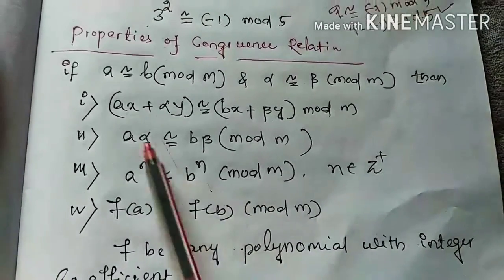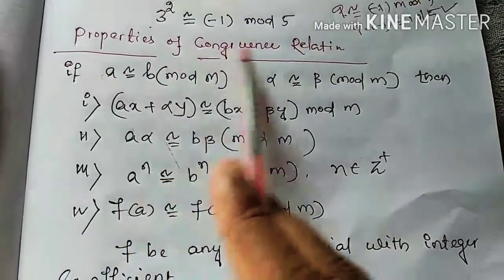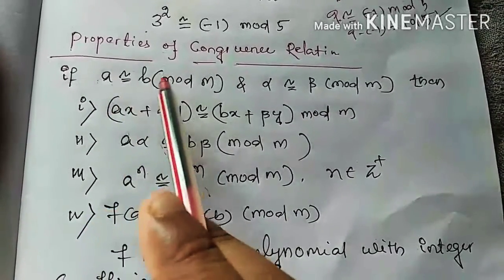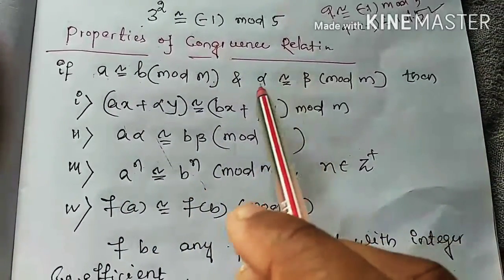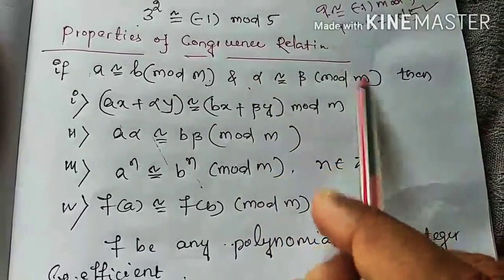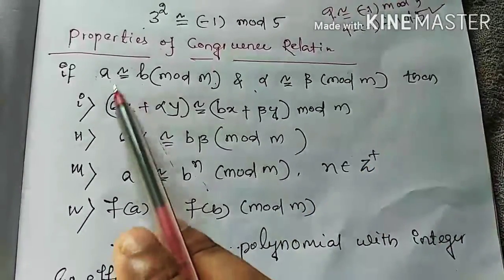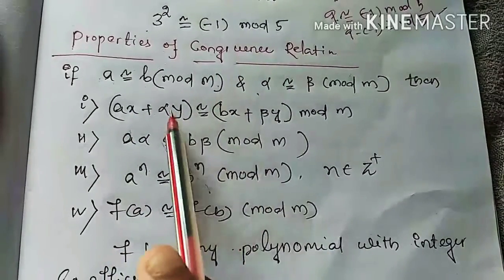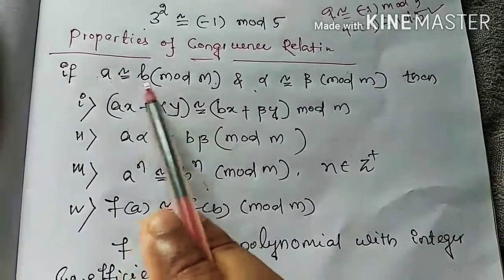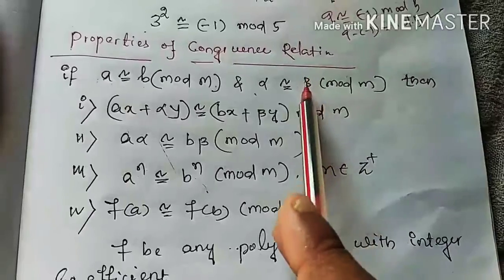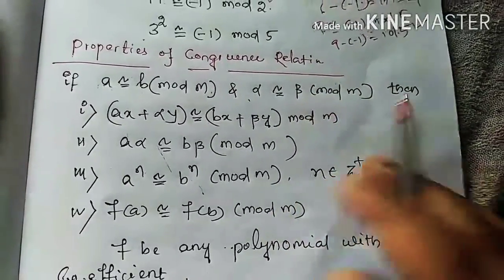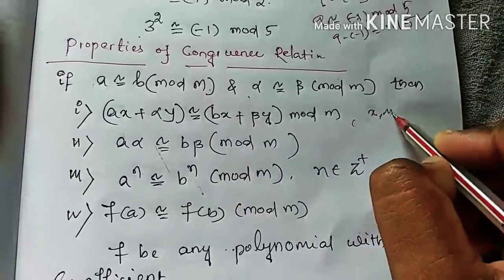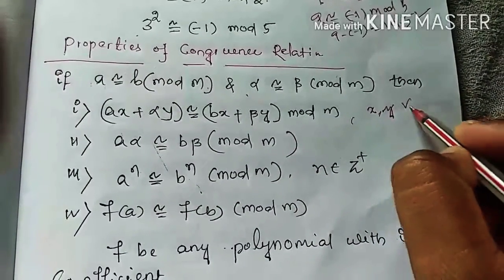Now here are some properties of the congruence relation. First, if a is congruent to b modulo m and alpha is congruent to beta modulo m, then we can write ax plus alpha·y is congruent to bx plus beta·y modulo m, where x and y are variables.